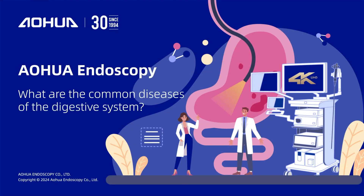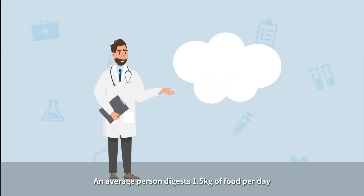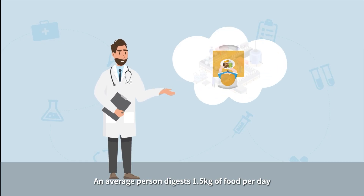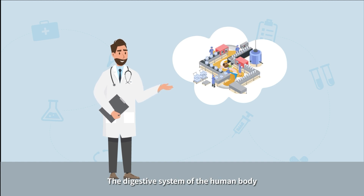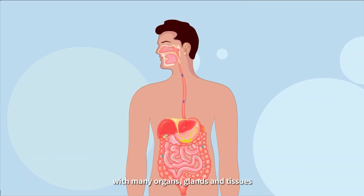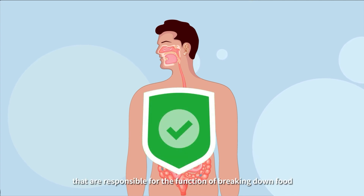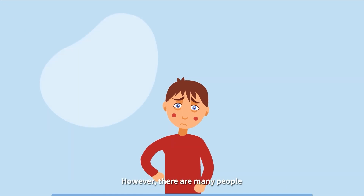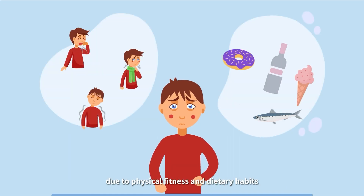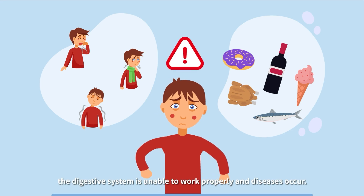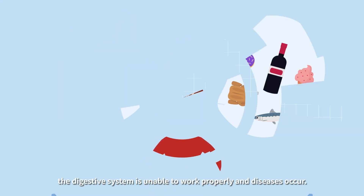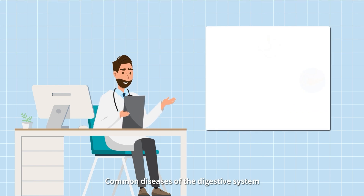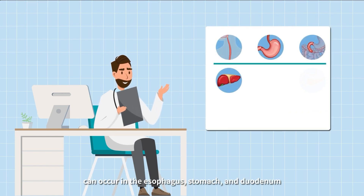What are the common diseases of the digestive system? An average person digests 1.5 kilograms of food per day. The digestive system of the human body is like a biological factory with many organs, glands, and tissues responsible for breaking down food. However, due to physical fitness and dietary habits, many people's digestive systems are unable to work properly and diseases occur.